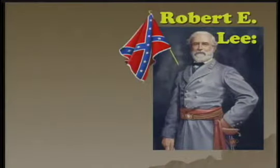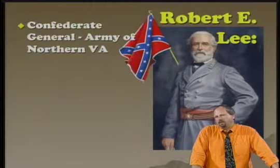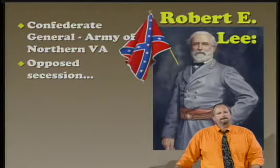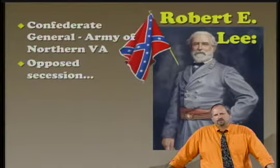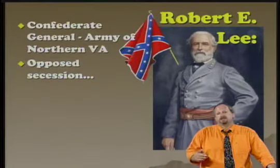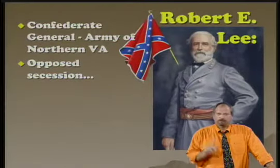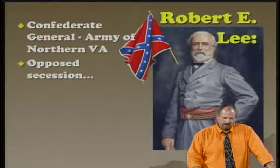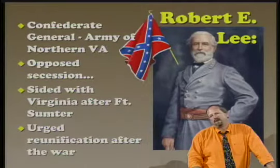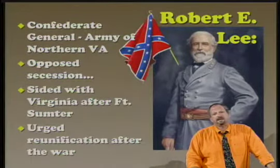Robert E. Lee was an important Virginian — the Confederate general of the Army of Northern Virginia. It was only later in the war that he was given command of all Confederate troops. Notably, Lee actually opposed secession and did not think Virginia was right to leave the Union. However, he knew he could not raise his sword against what he called his country of Virginia, and so he reported for duty and accepted command to protect Virginia from Union forces. After the war, he urged rapid reunification.